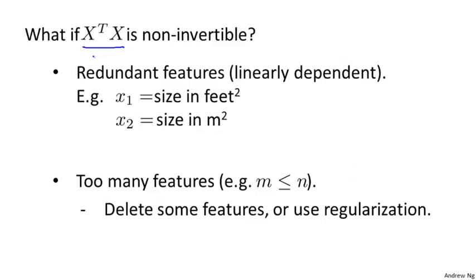The first cause is if somehow in your learning problem, you have redundant features. Concretely, if you're trying to predict housing prices, and if x1 is the size of the house in square feet, and x2 is the size of the house in square meters, then one meter is equal to 3.28 feet, rounded to two decimals. And so your two features will always satisfy the constraint that x1 equals 3.28 squared times x2.